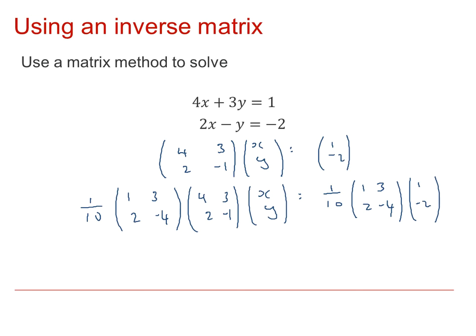On the left-hand side, because all of this here forms the identity, I've just got (x, y), and on the right-hand side, if we calculate that, I've got 1 tenth outside, and then multiplying out, we get 1 plus -6, which is -5, and then on the bottom line, 2 plus 8 is 10.